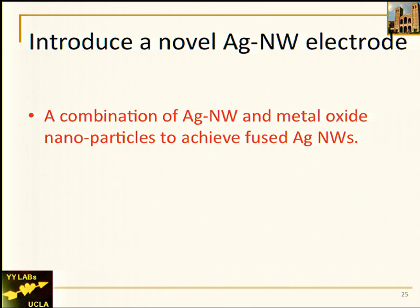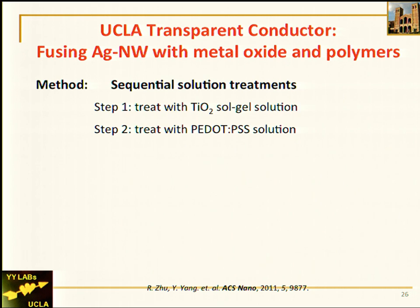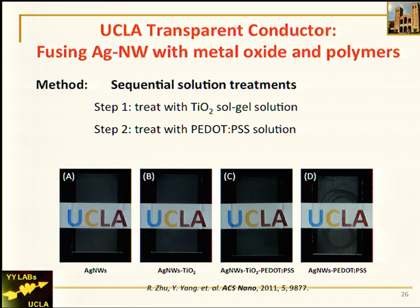Now I'd like to change the subject and introduce several important recent advances at UCLA. We have invented a new type of silver nanowire electrode. Silver nanowires have been known for a long time, but what we have done is a combination of silver nanowires and metal oxide nanoparticles. We applied a titanium sol-gel nanoparticle solution to treat the silver nanowire network, subsequently overcoated with PEDOT:PSS. The electrode is fairly transparent — transparency as high as about 90%.